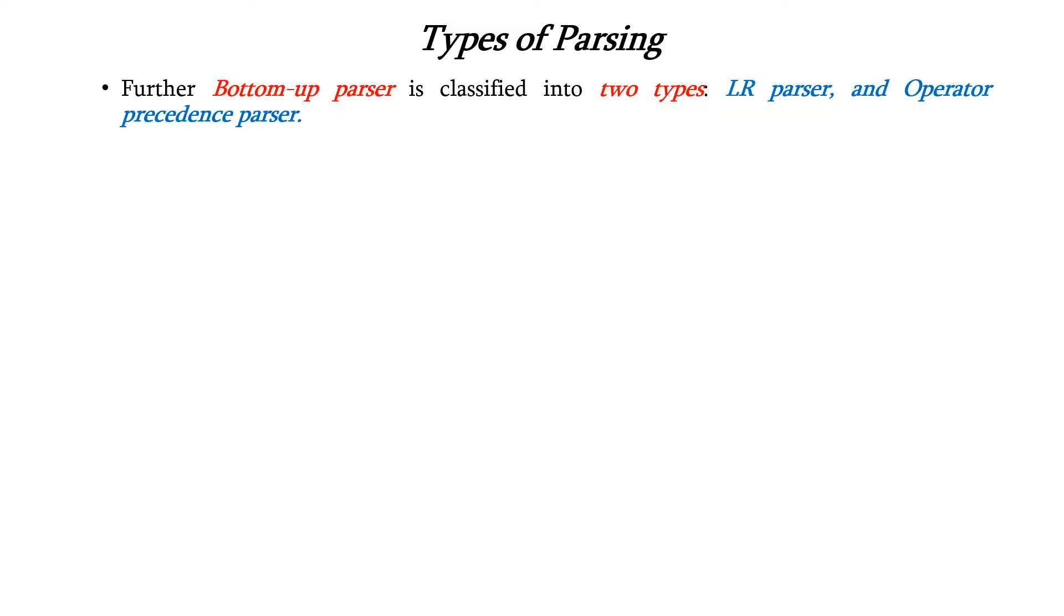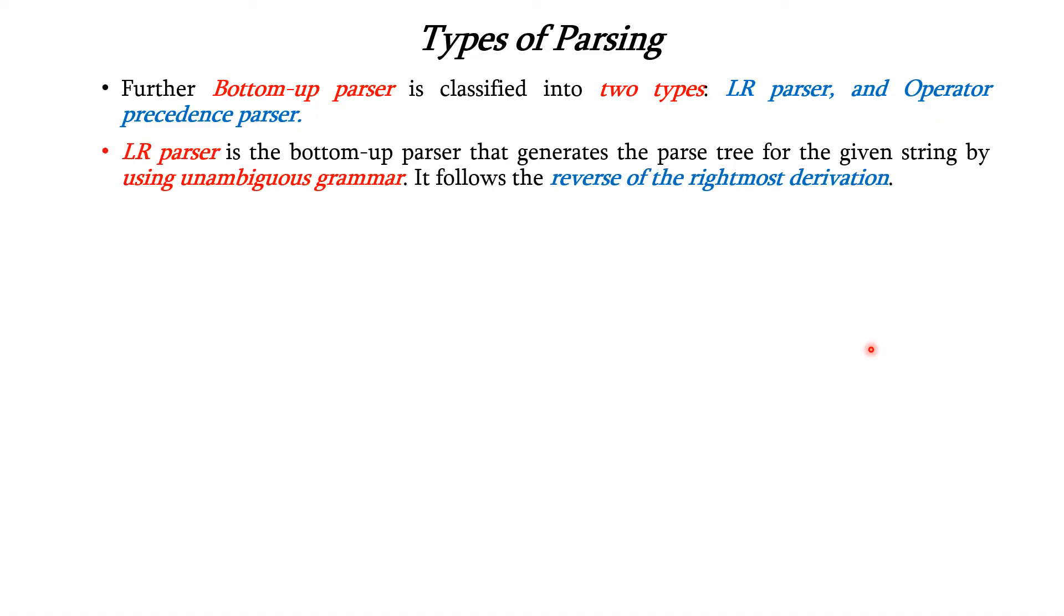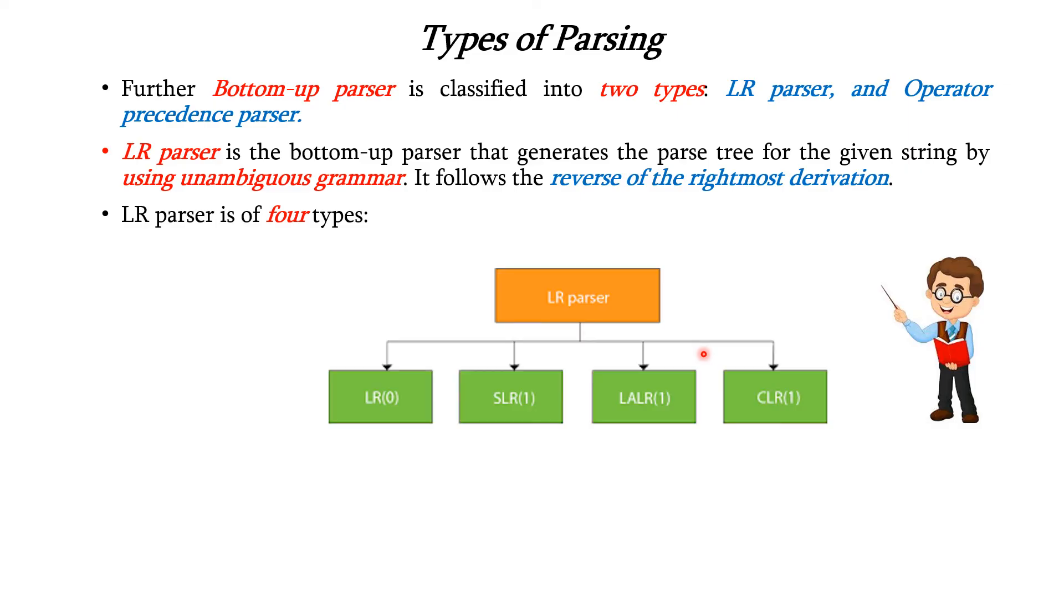Further, the bottom-up parser can be classified into two types as we have seen in the diagram: LR parser and operator precedence parser. LR parser generates the parse tree for the given string by using unambiguous grammar. It follows the reverse of the right-most derivation. LR parser can be further classified into four types as illustrated in this diagram: LR0, SLR1, LALR1, and CLR1.